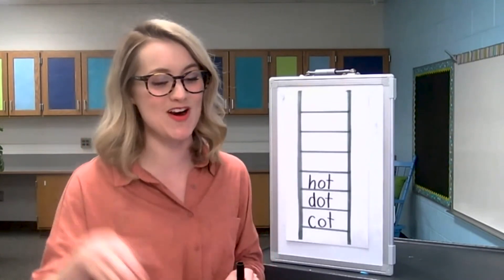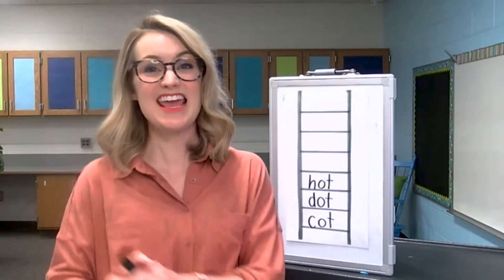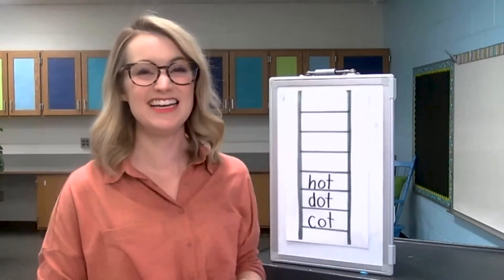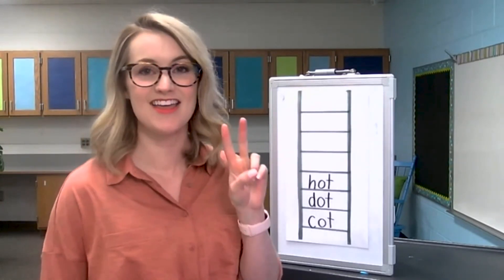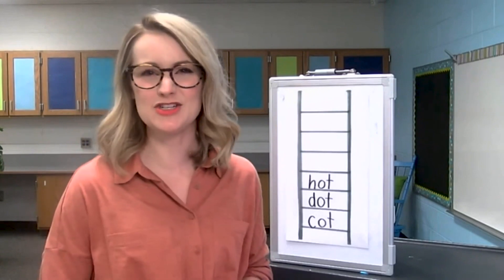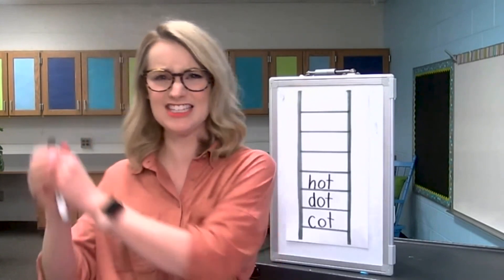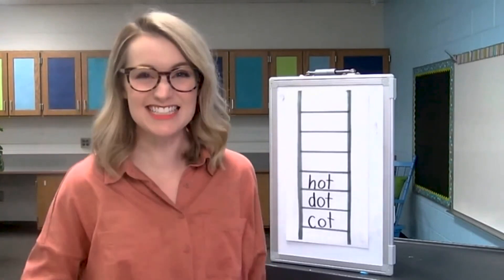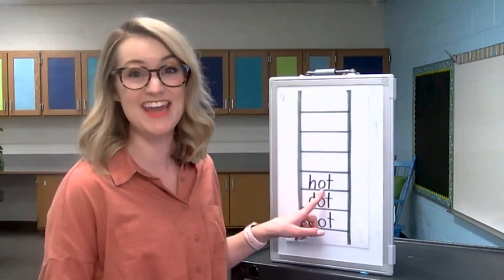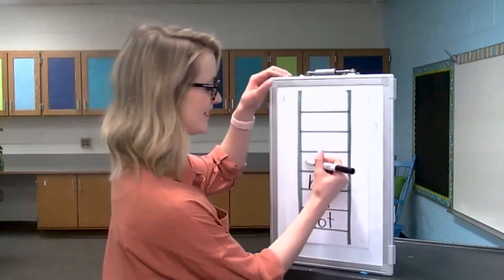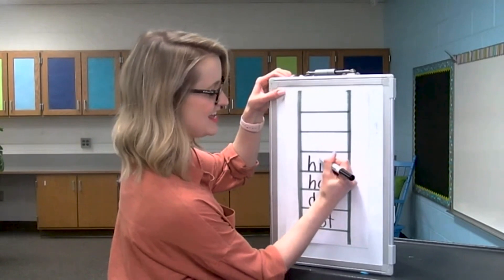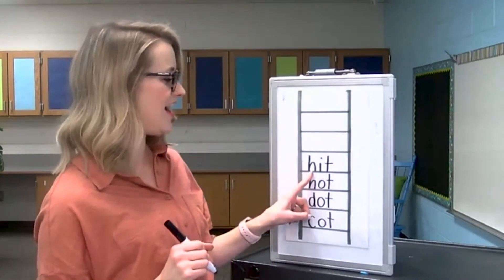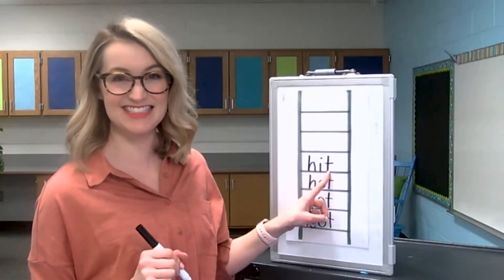We're going to change one letter in the word hot to make the word hit. I can hit the baseball with a bat. Hit. Let's listen for the sounds: H-I-T. What letter do you think we're going to change to turn hot into hit? Yes, the middle sound. We're going to take out the O and add in an I. Let's write it down: H-I-T. Take your finger and let's check it: H-I-T. Hit. Good job.